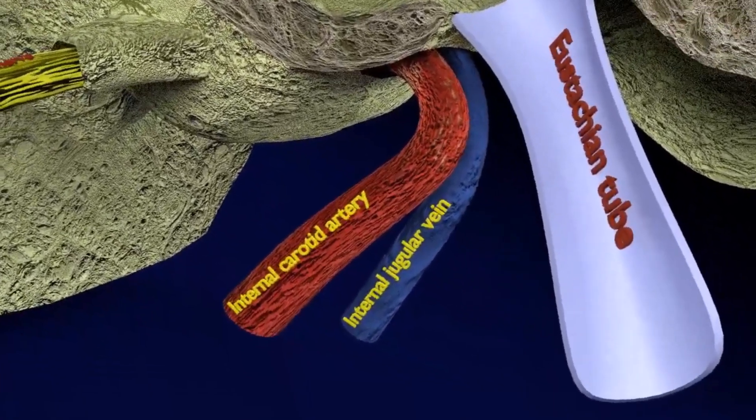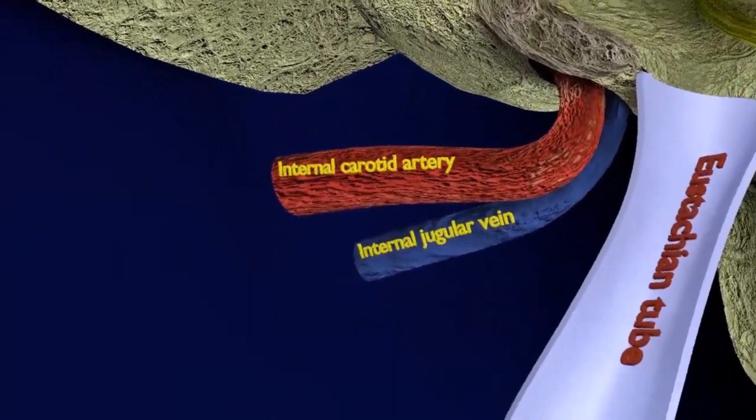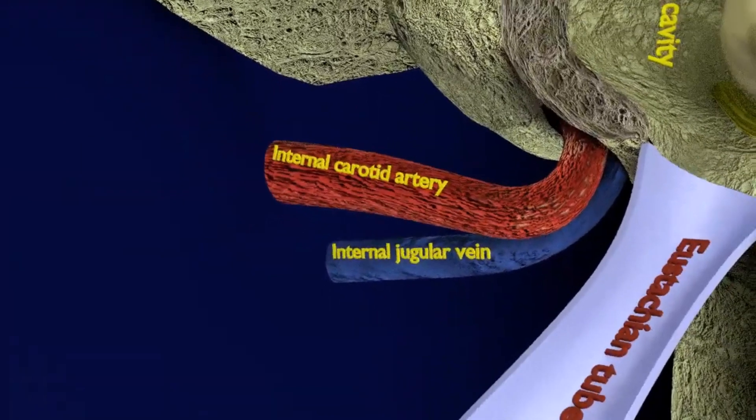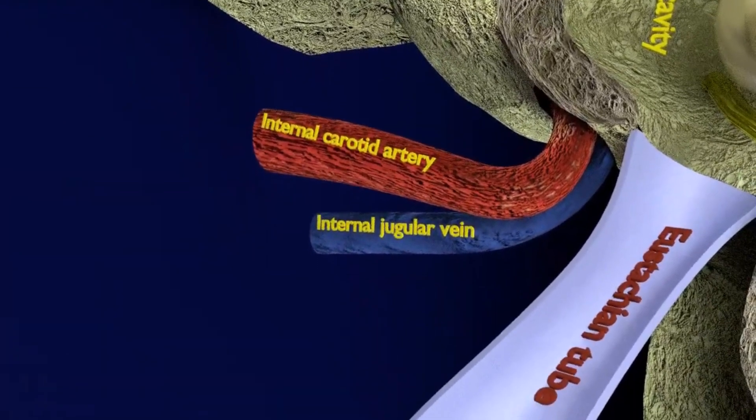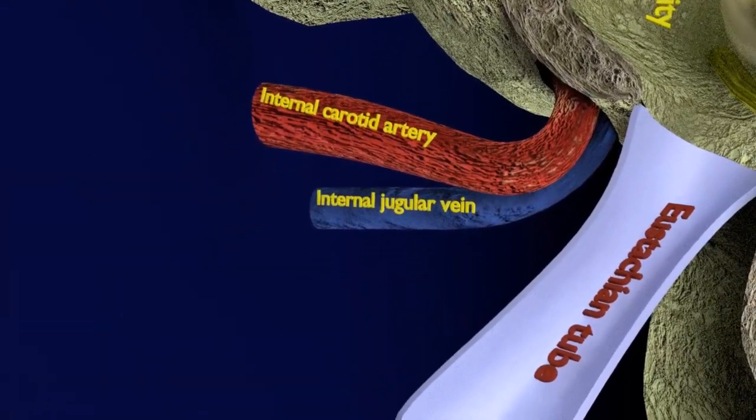The internal jugular vein can be seen exiting through the jugular foramen. The internal carotid artery enters the carotid canal in the petrous portion of the temporal bone.